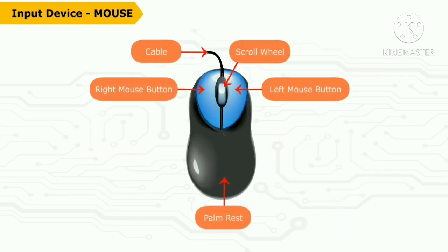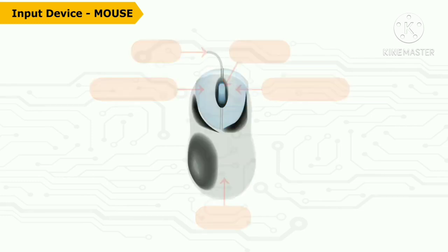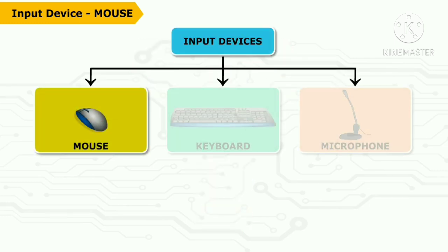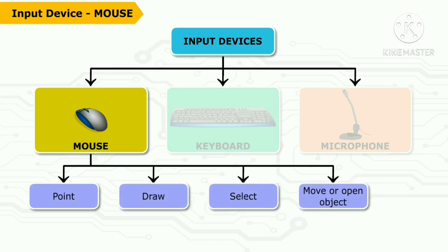Input devices are used to enter data into a computer. For example, the mouse controls the movement of a pointer on the screen. Also known as a pointing device, it is used to point, draw, and select.